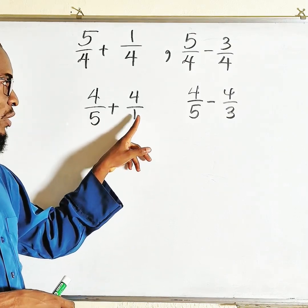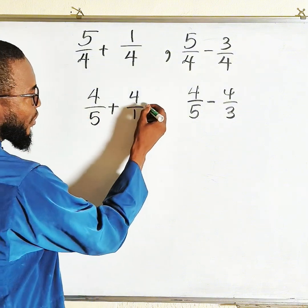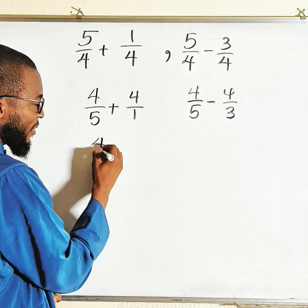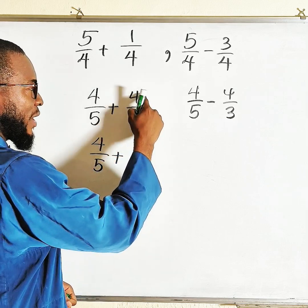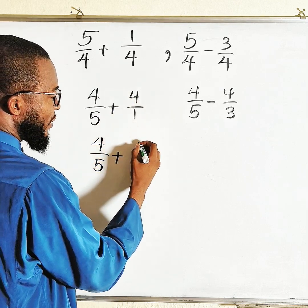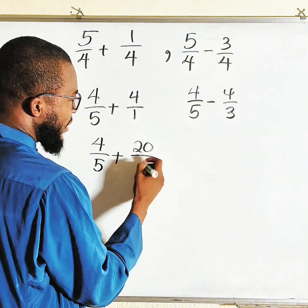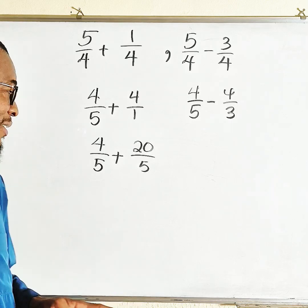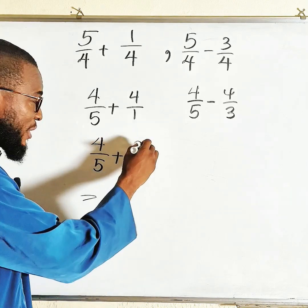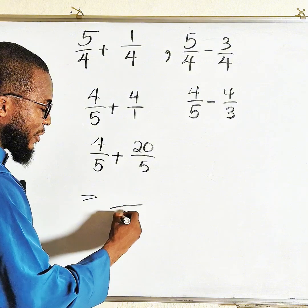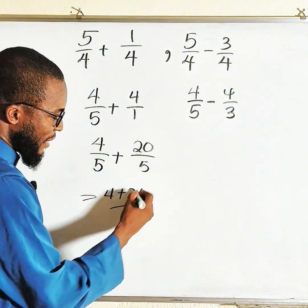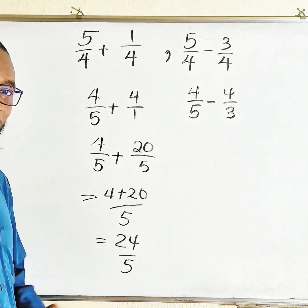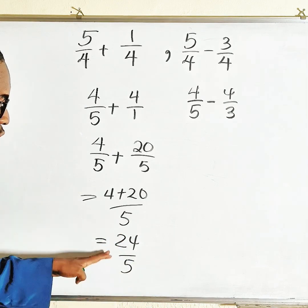I can change this to one by multiplying this one by five. So you can multiply the top and the bottom by five. This one remains the same: 4/5 plus five times four is 20 divided by five times one which is five. You see that the denominators are now the same, so you can add the numerators and pick a single denominator. This is four plus twenty—that's 24 divided by five.